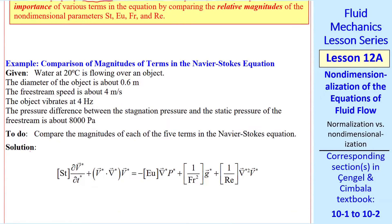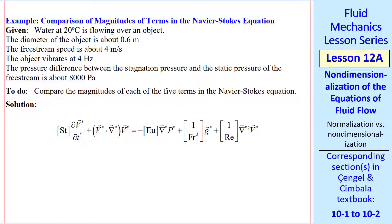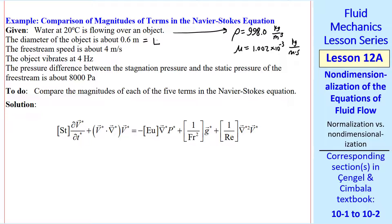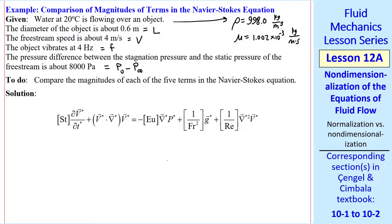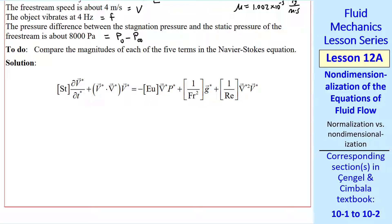Let me illustrate with an example. Suppose we have water at 20°C flowing over an object — say flow over a cylinder. For water at 20°C, we look up the density and viscosity. The diameter is 0.6 meters, so we set that as our characteristic length scale. We set the characteristic speed as the freestream speed, and the characteristic frequency as 4 Hz (the vibration frequency). There's a pressure difference between the stagnation pressure and the static pressure at some reference point, which we set as our characteristic pressure difference.